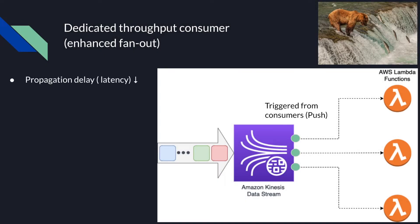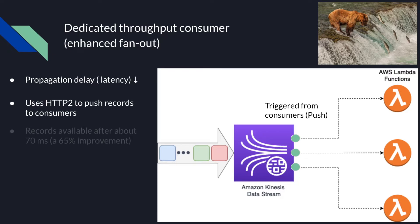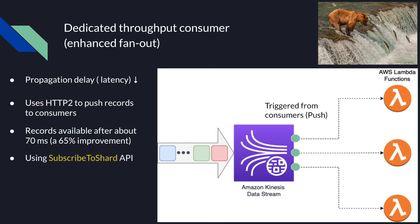Enhanced Fanout has lower read propagation delay, defined as the end-to-end latency from the moment a record is written into the stream until it is read by a consumer application. This is because Enhanced Fanout uses HTTP/2, which uses persistent connections and pushes records to the consumers over a long-lived connection. With Enhanced Fanout, records can be delivered from producers to consumers in 70 ms or better. So instead of using the GetRecords API, we use the SubscribeToShard API.